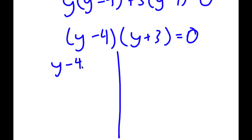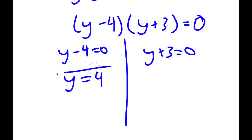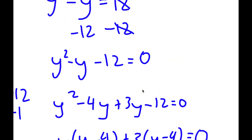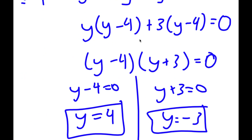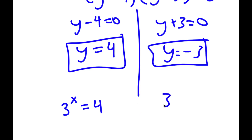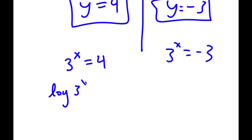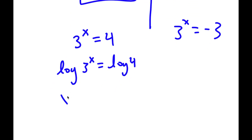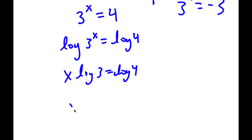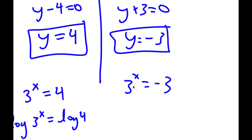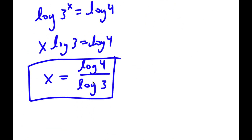This gives me two equations: y minus 4 equals 0, giving y equals 4, and y plus 3 equals 0, giving y equals negative 3. Remember we let 3 to the power of x equal y. So I have 3 to the power of x equals 4, and 3 to the power of x equals negative 3. For 3 to the power of x equals 4, I take the log on both sides: x times log 3 equals log 4, meaning x equals log 4 over log 3. For 3 to the power of x equals negative 3, you can't raise a positive number to get a negative, so there's no solution. My only solution is log 4 over log 3.